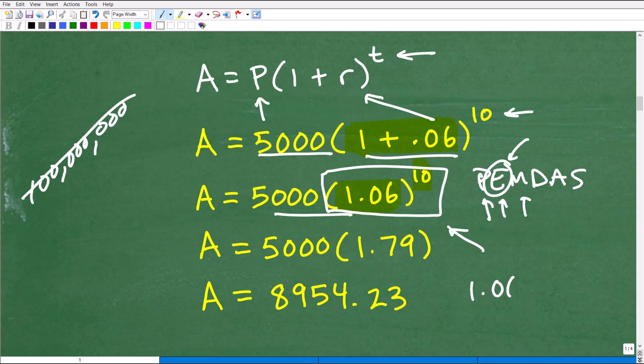So you just go 1.06, use that caret function. Most of your calculators to the 10th power. And when you do that, you'll get 1.79.